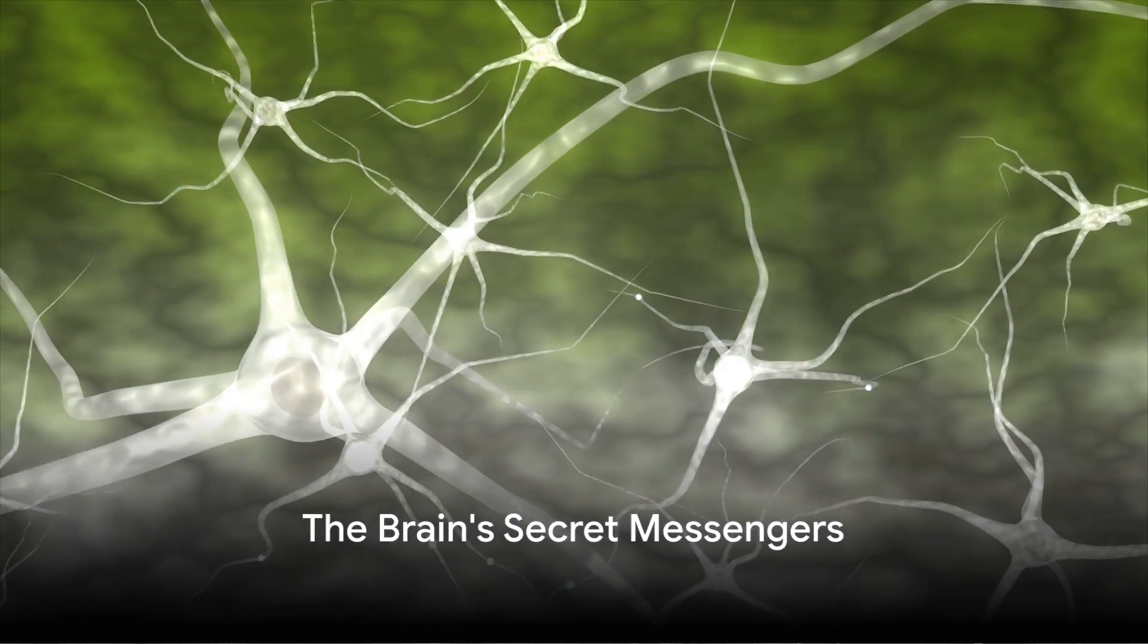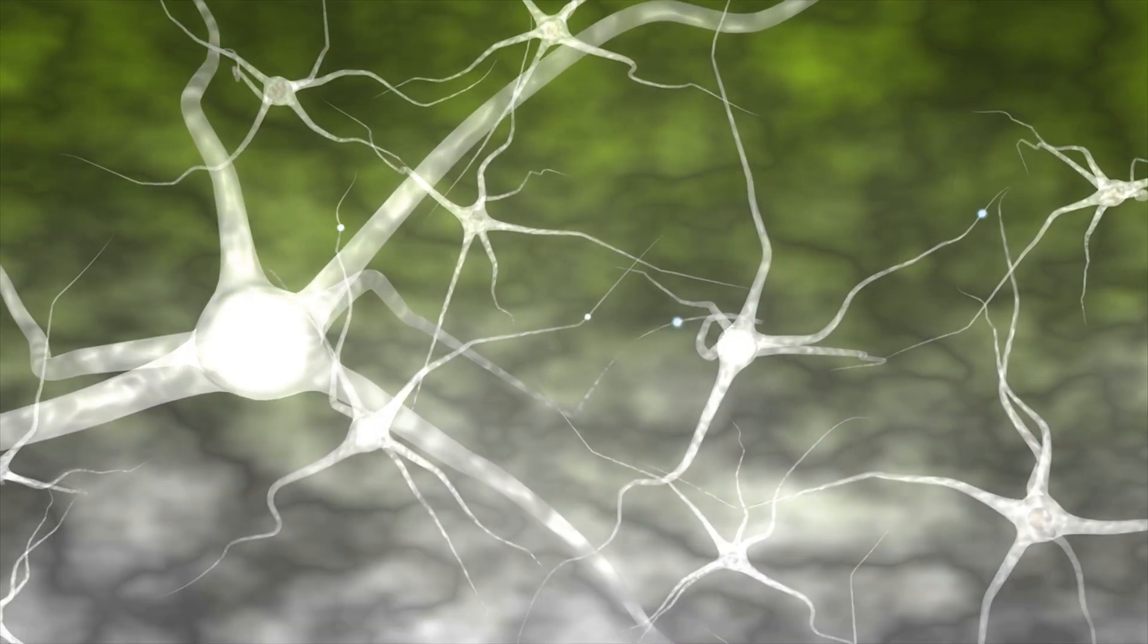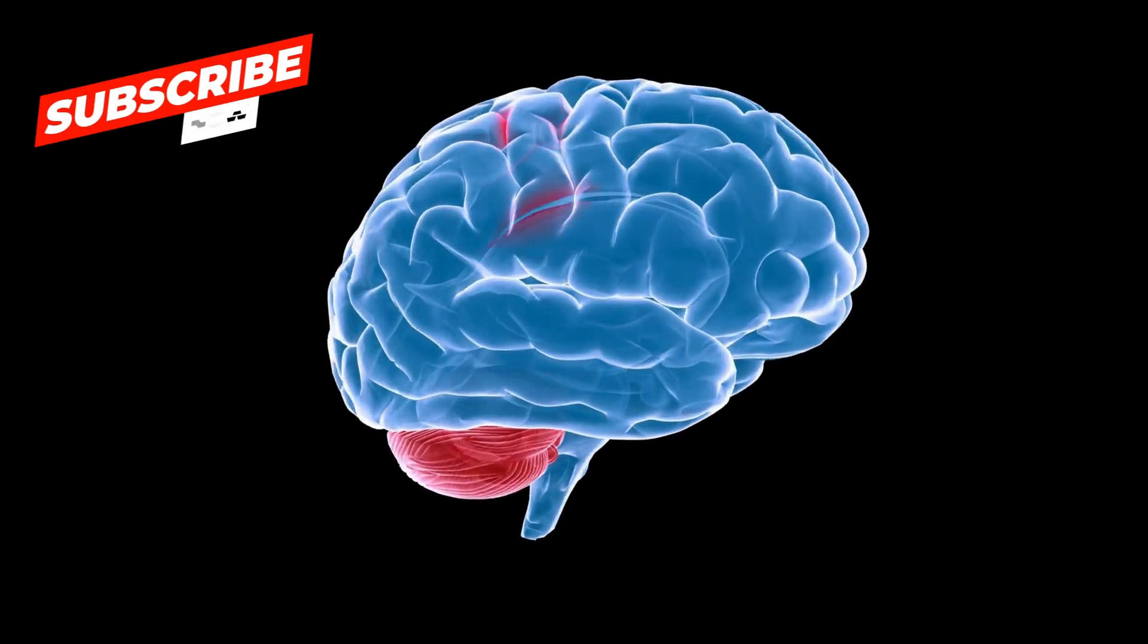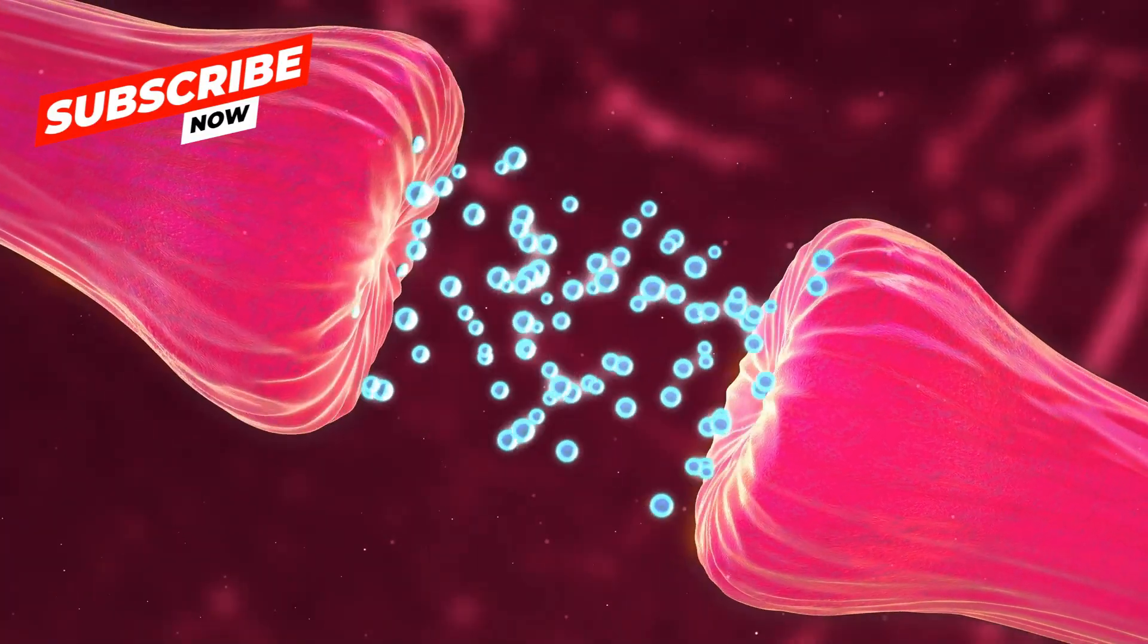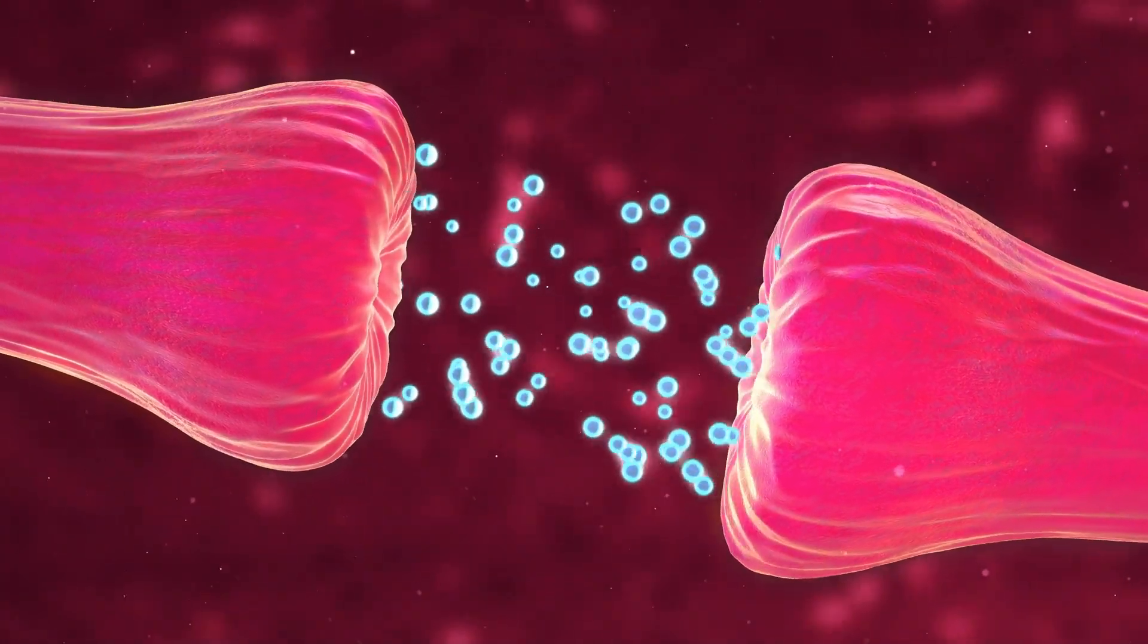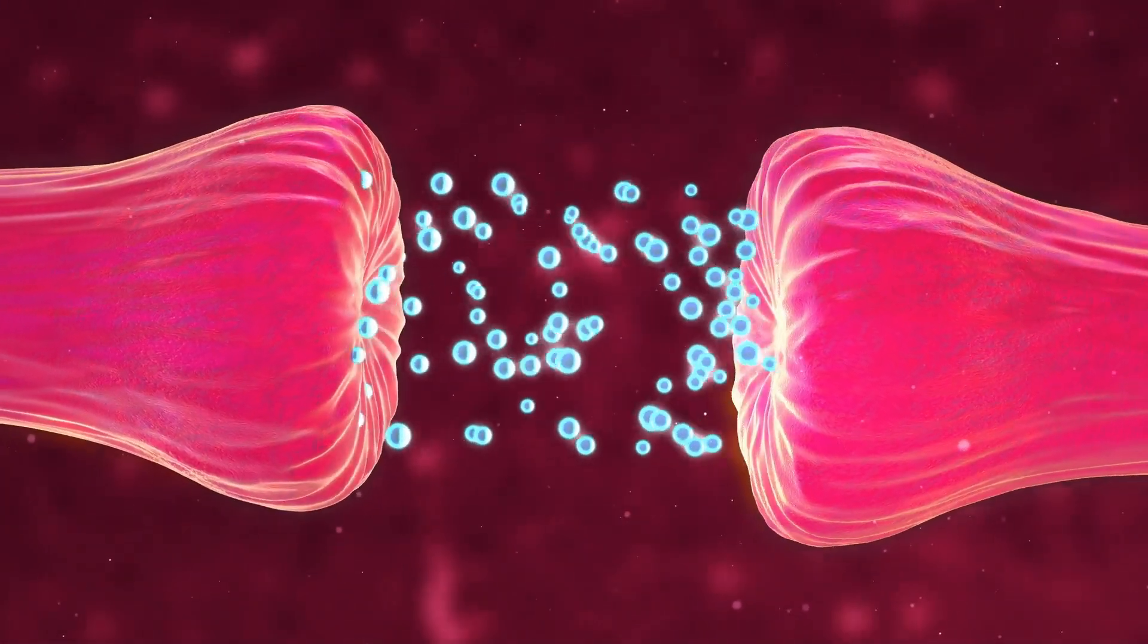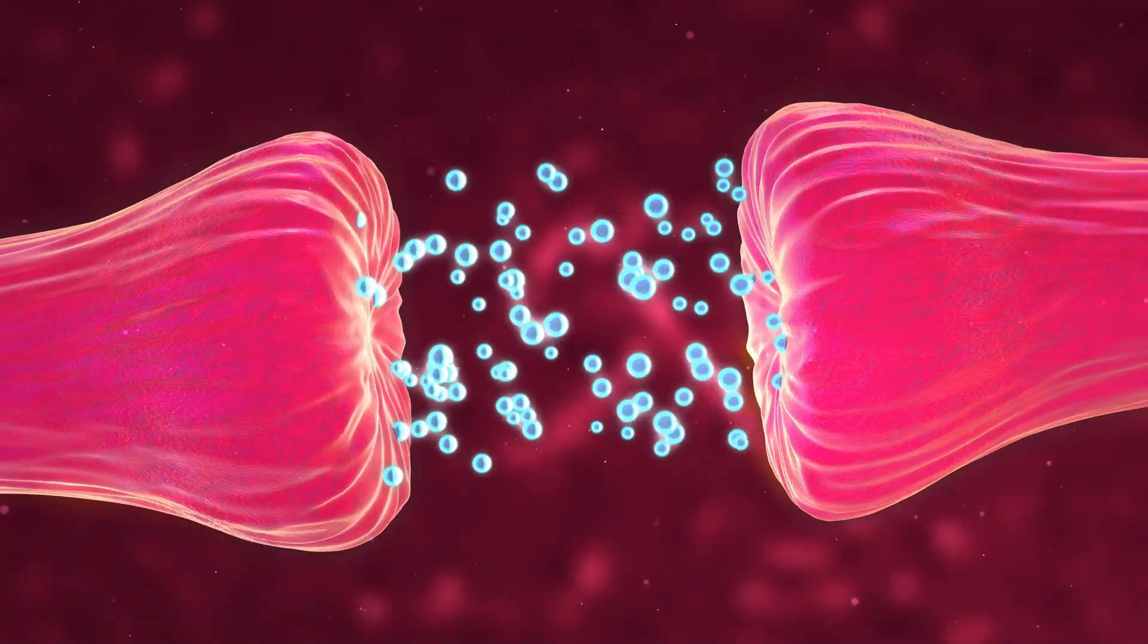Imagine a bustling city where messages zip around at lightning speed. This city is your brain, and the messages are neurotransmitters. In the magnificent metropolis of your mind, these tiny chemical messengers are the unsung heroes, tirelessly ensuring that everything runs smoothly.